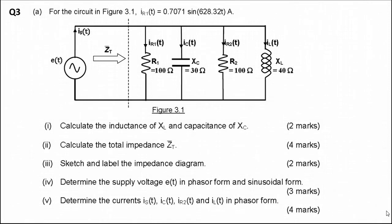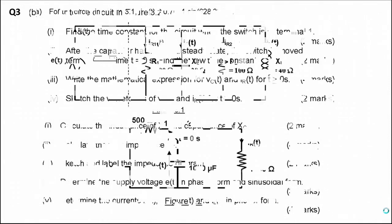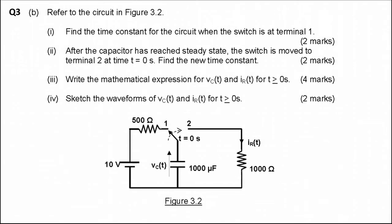Let's go on to question 3 part B. This question shows a DC charging and discharging circuit with a 10 volt supply and a switch that toggles between position 1 and position 2.